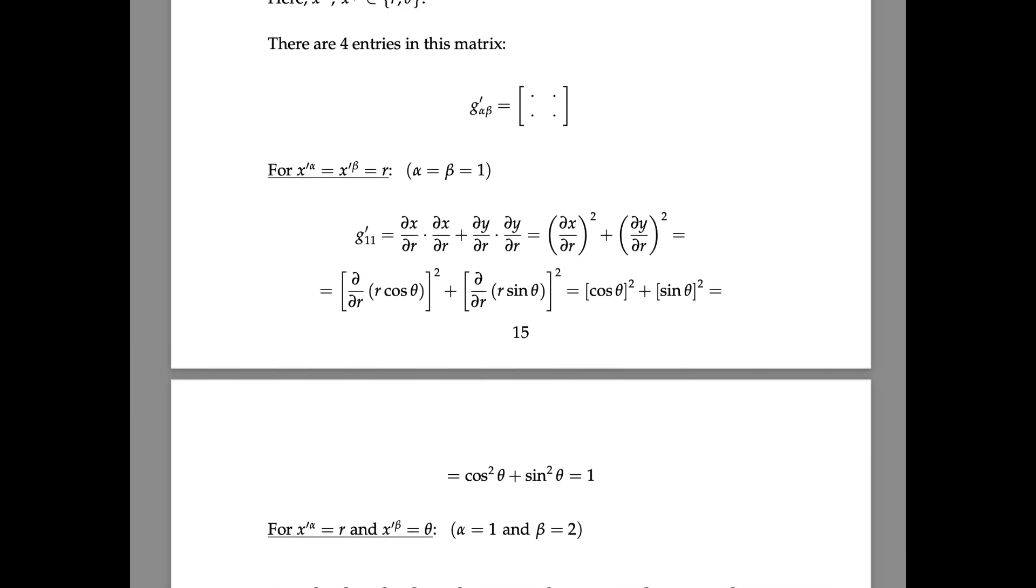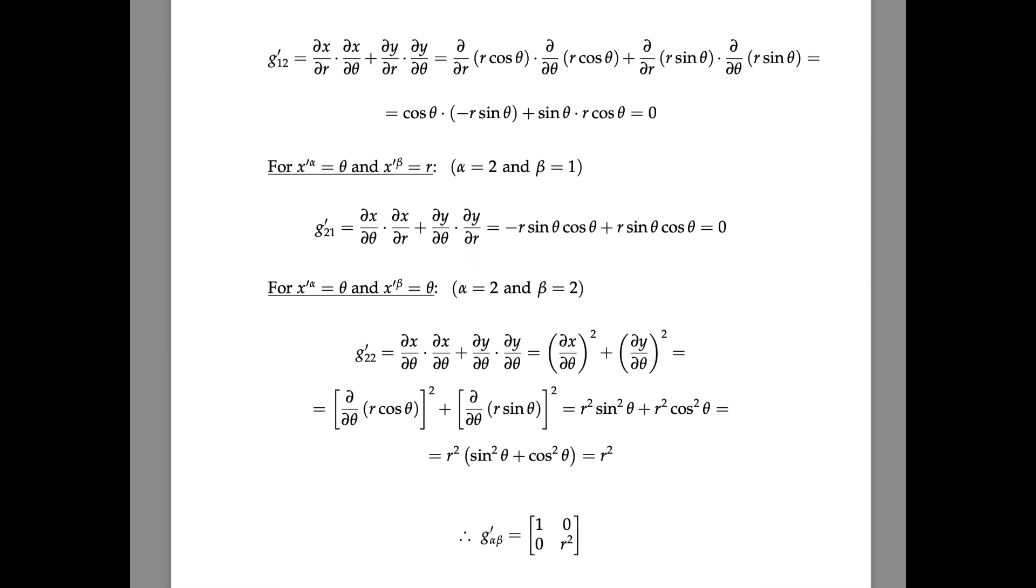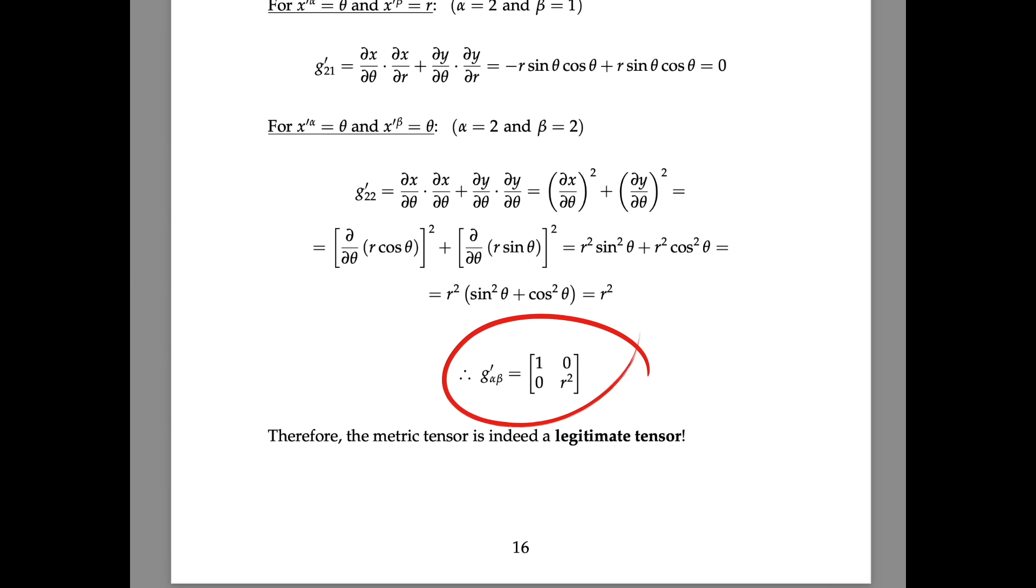If this fails to happen, then we just detected a tensor imposter. We tried it out in the pdf link that you will find in the description of this video. And after a few calculations, we got exactly the same result as before. Therefore, the metric tensor is indeed a legitimate tensor.